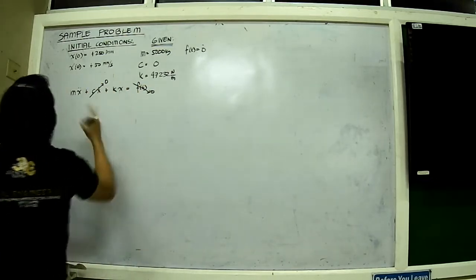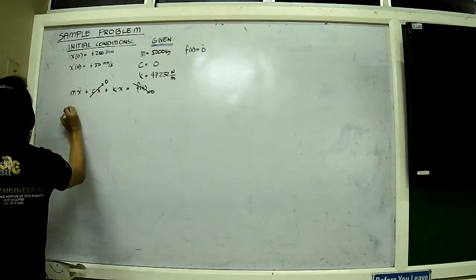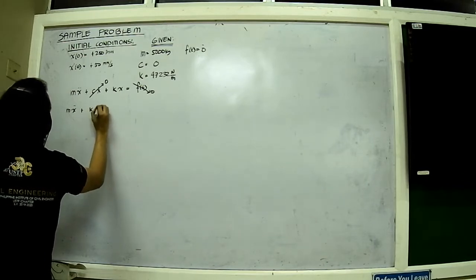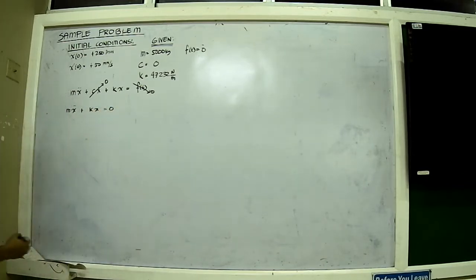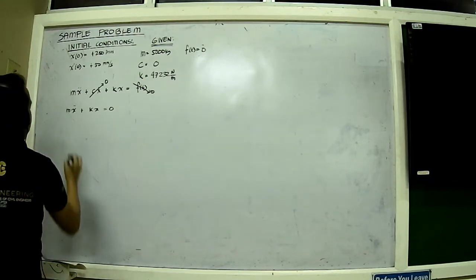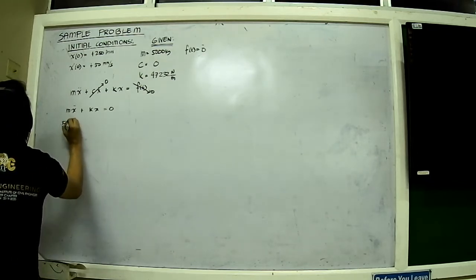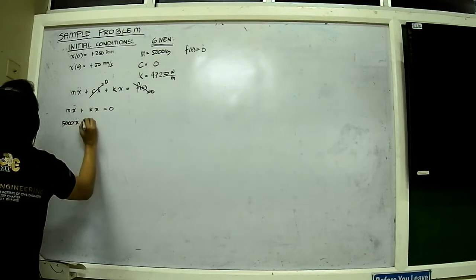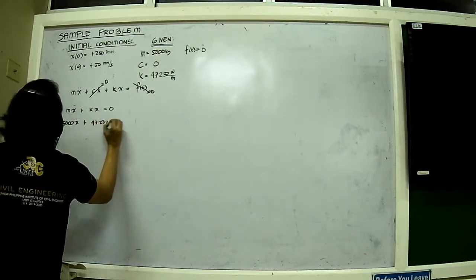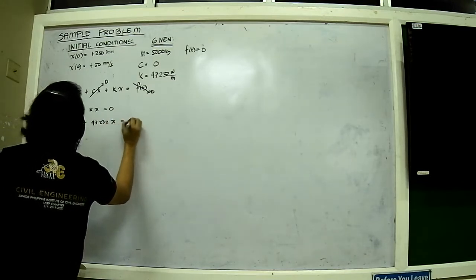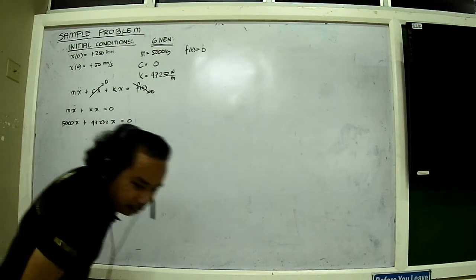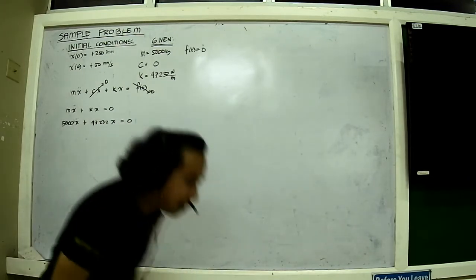Since both initial conditions are equal to zero, I will have m·x'' plus kx equals zero. Now I substitute m with 5000, plus kx equals 47232, which is equal to zero. I hope the numbers are clear.